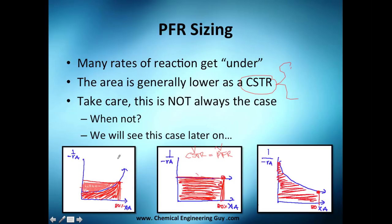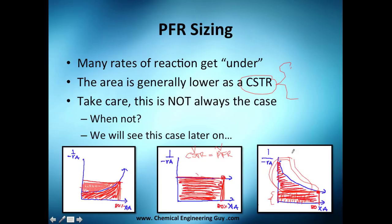Finally, this is the only case in which the volume of a CSTR will be smaller — here you can see that the CSTR value is only this little rectangle, while the PFR requires all this additional area. Not that the PFR is wasting space — without it you wouldn't achieve that conversion. But now you know the cases, and we're going to go much deeper into this in the next section.